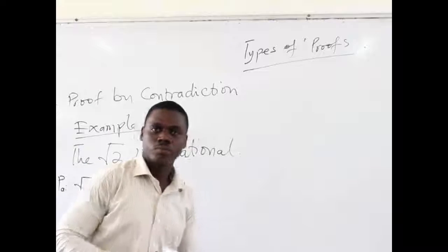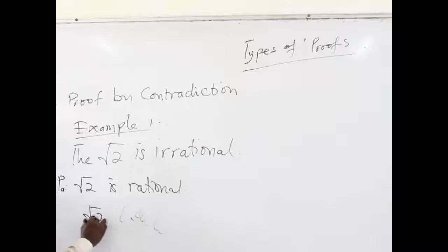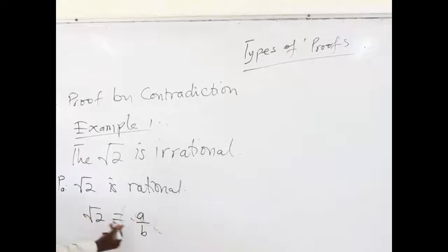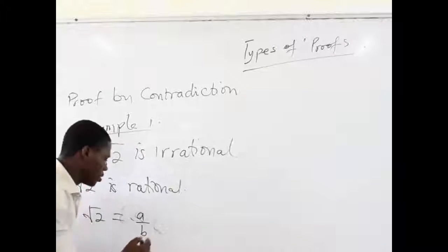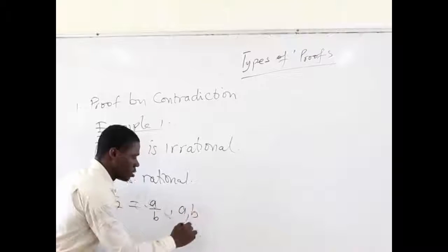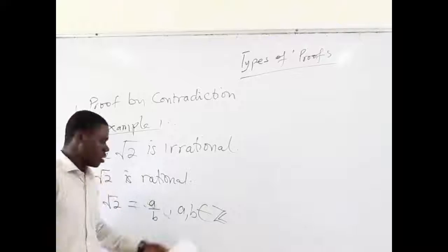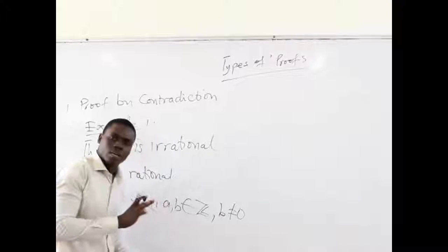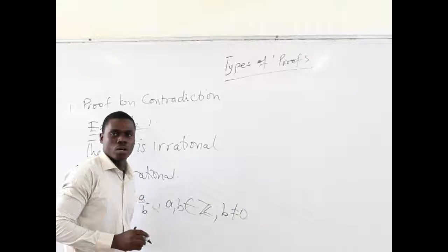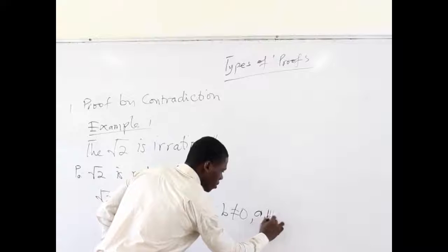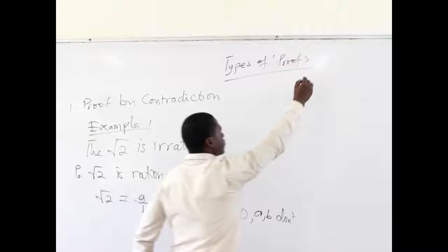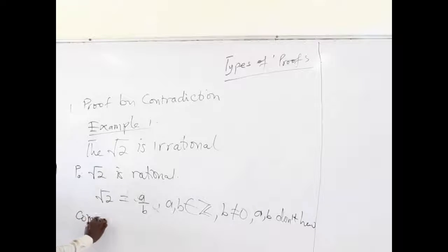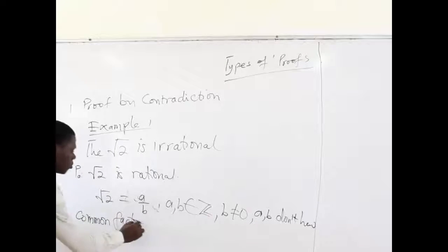Now, if root 2 is rational, then what it means is that we are going to have root 2 written in the form A divided by B, where A and B belong to the set of integers, and B is not zero. Also, A and B are in their lowest form, which means A and B don't have common factors.